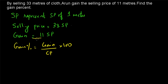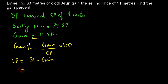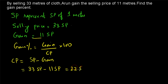We have the gain. We now need to find the cost price. Cost price equals selling price minus gain. Our selling price is 33 SP and our gain is 11 SP. So our cost price is equal to 33 SP minus 11 SP, which equals 22 SP.